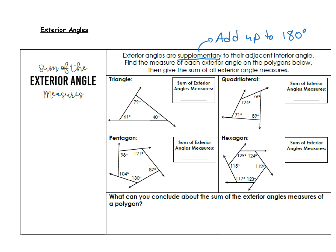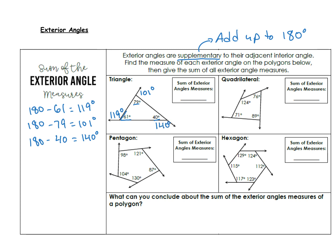All we're going to be doing is subtracting from 180. We're just going to be doing 180 minus each interior angle. In the triangle, I have 61 degrees. 180 minus 61 gives me 119. I'm going to do the same thing with 79: 180 minus 79 gives me 101. And 180 minus 40 gives me 140 degrees. Then I take these three and add them together: 119 plus 101 plus 140. When I do that in a calculator, I get 360 degrees. So the sum of these angles adds up to 360.